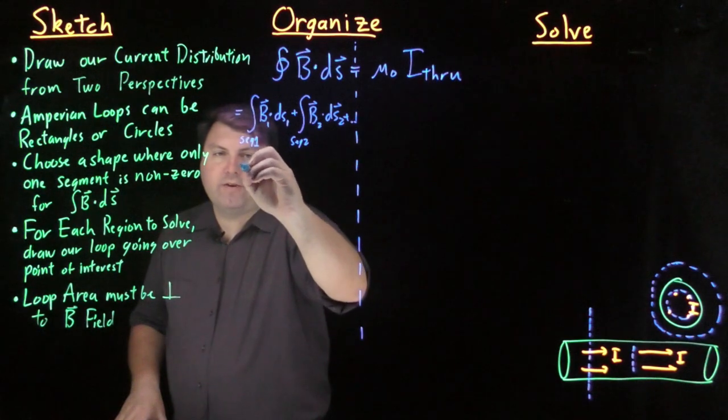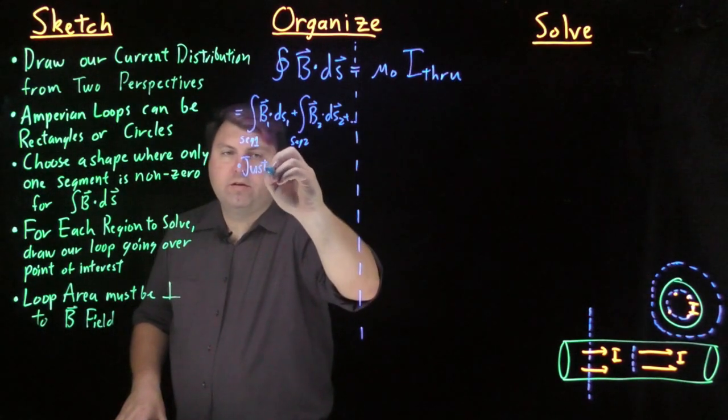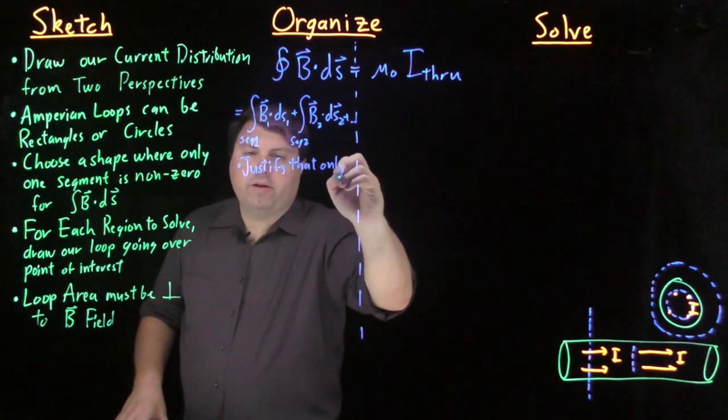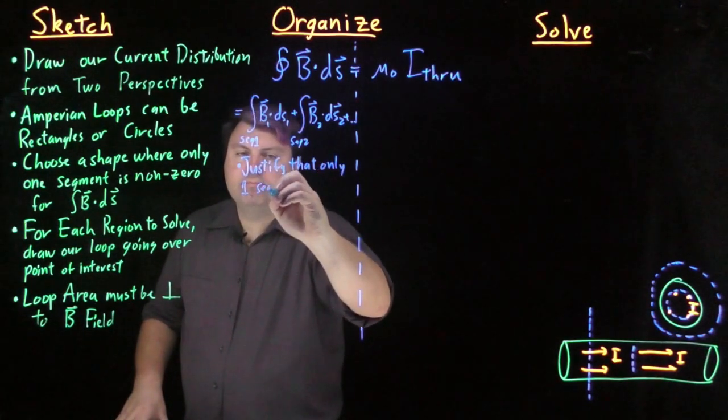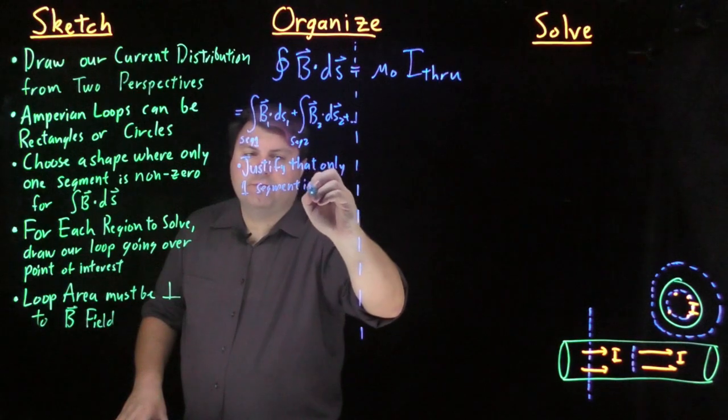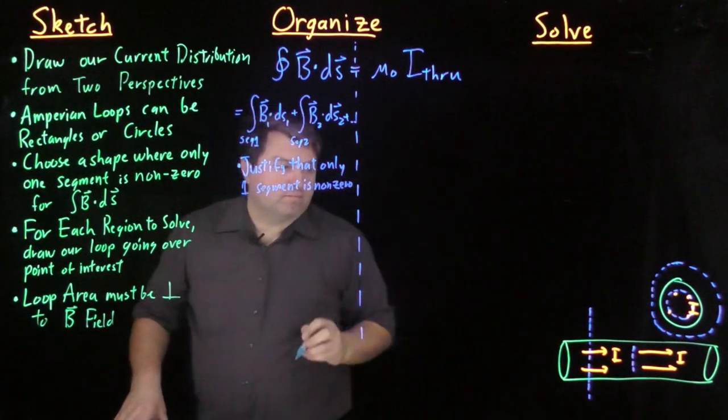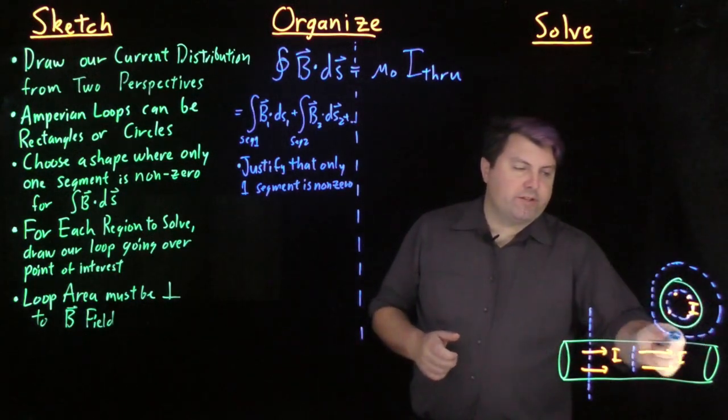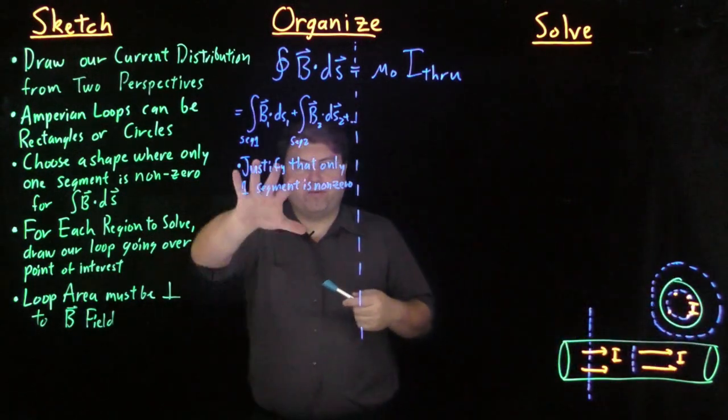What we want to do is we want to justify that only one segment is non-zero. So in this case, we only have one segment for a circle, so we don't have to worry about that.